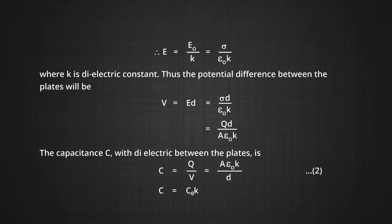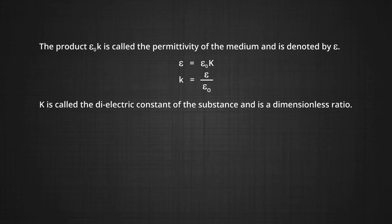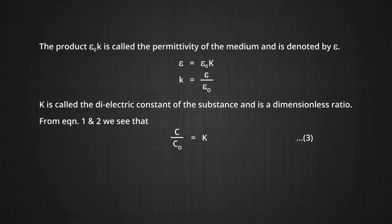As we have seen earlier, A epsilon naught upon D is the capacitance of the capacitor with vacuum as the medium of separation, that is C₀. Therefore, C is equal to C₀ times K. The product epsilon naught K is called the permittivity of the medium and is denoted by epsilon. Epsilon is equal to epsilon naught times K, or K is epsilon upon epsilon naught. K is called the dielectric constant of the substance and it is a dimensionless ratio. From equations 1 and 2, we also see that C by C₀ is equal to K, the dielectric constant.